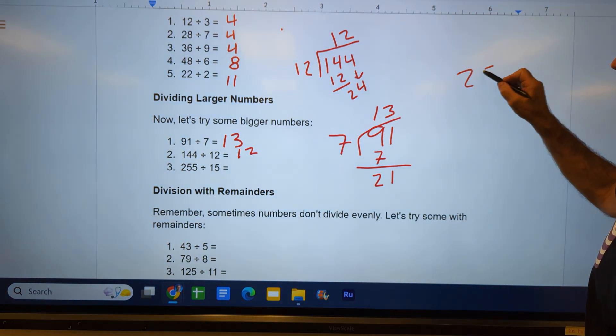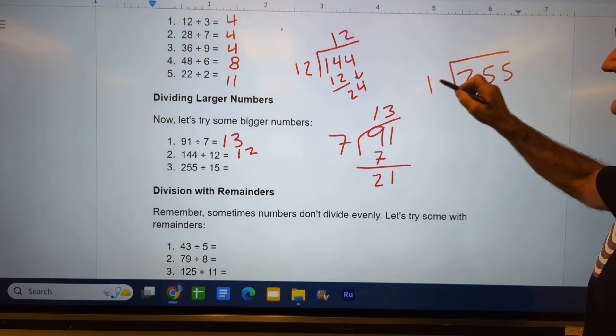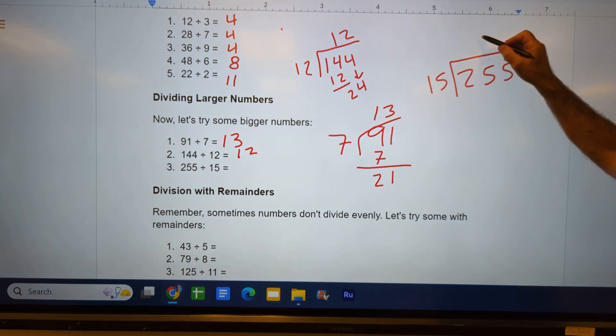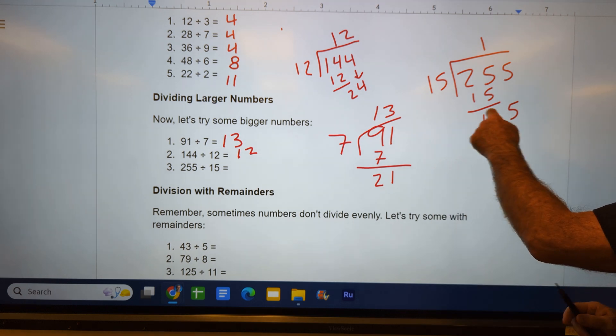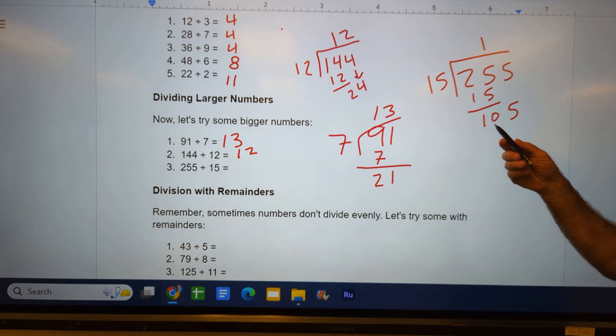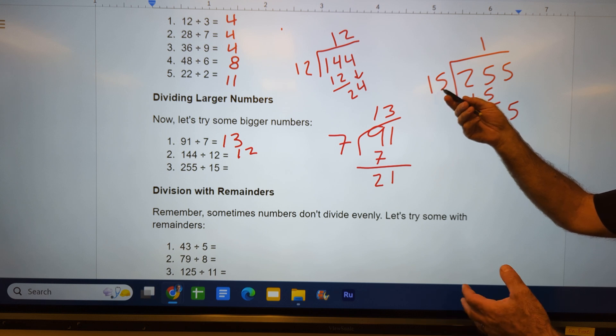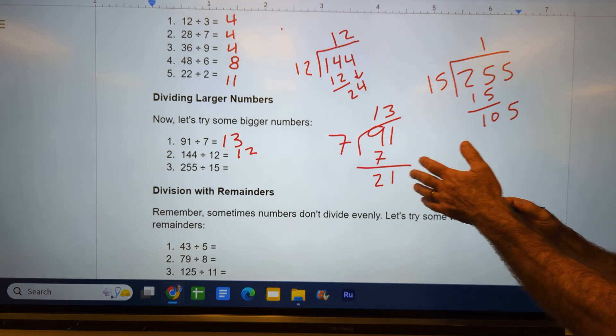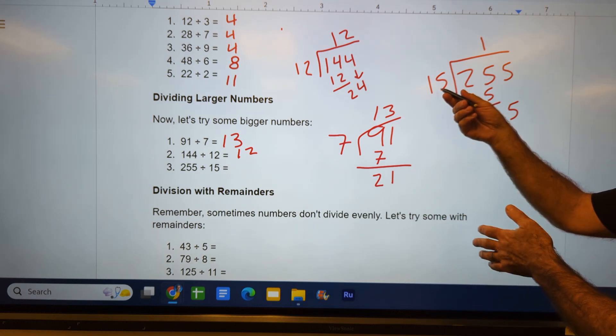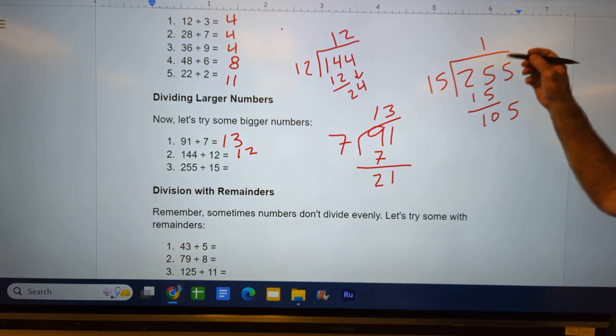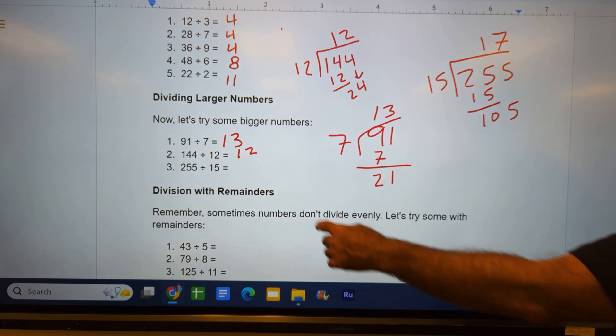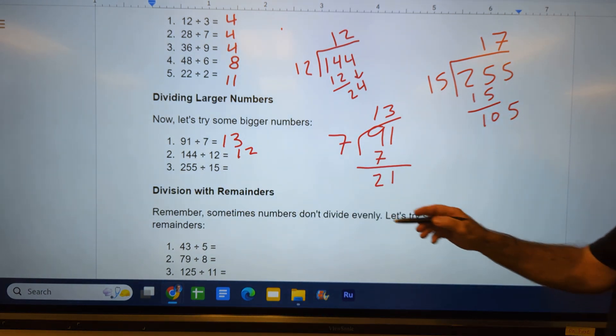Then 255 divided by 15. 15 goes into 25 one time. 25 minus 15 is 10. Bring down this 5. 15 goes into 105. Well, 15 times 10 is 150. 5 is 75. So now I'm going to just keep adding them up: 75, 85, 90, 105. So that was a 7. So 255 divided by 15 is 17.